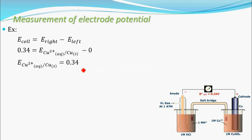This 0.34 volt reading is the electrode potential of the copper electrode. Specifically, it is the reduction potential of copper — Cu²⁺ giving Cu. At the cathode side, reduction happens; at the anode side, oxidation happens. So the potential measured is the reduction potential. In this chapter, all electrode potentials are measured this way and are expressed as reduction potentials. The actual meaning of reduction potential will be explained in the next video.